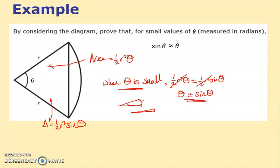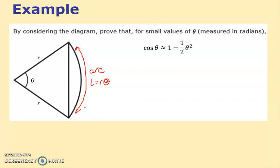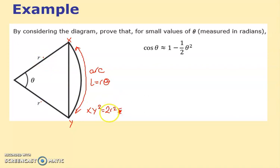For the cosine approximation we don't look at areas — we look at the length of the arc. The arc length is l equals r theta. We can also say that the chord XY squared equals r squared plus r squared minus 2r squared cos theta, which we write as 2r squared times one minus cos theta. The argument is the same trick: when theta is small, XY — the chord — is almost the same as the arc length l.